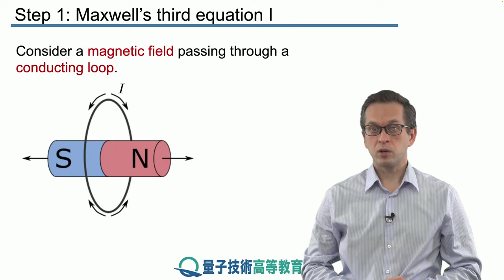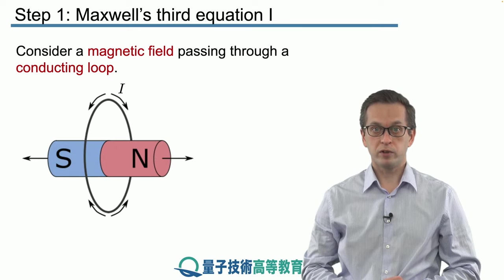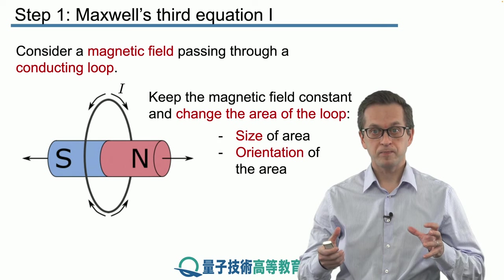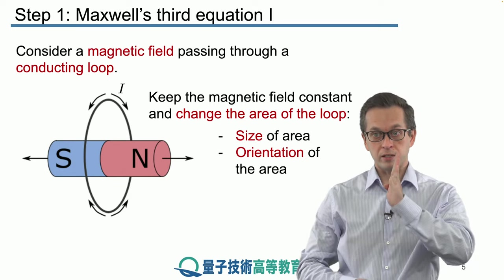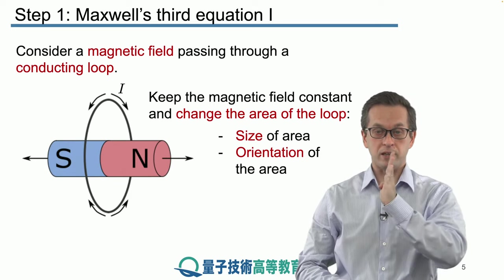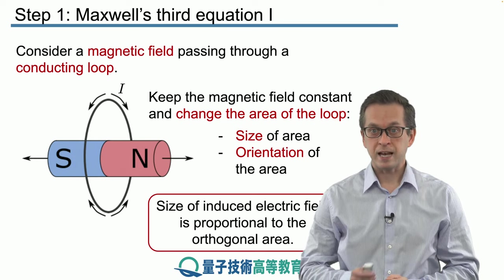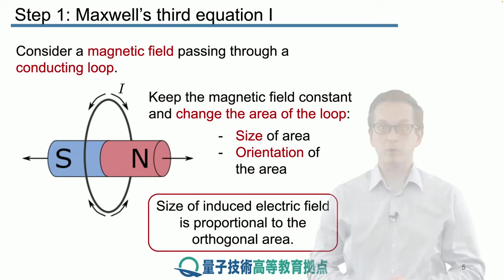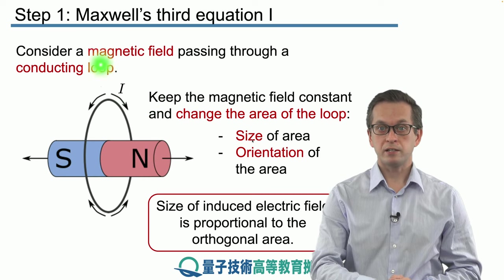We can also consider the magnetic field to be static and play around with the loop. For example we can increase its size or change the orientation of the area. So instead of having it perpendicular to the magnet we can have it at some angle. Experimentally what we observe is that the size of the induced electric field is proportional to the orthogonal area. Here the area is the area enclosed by the loop, so it's this area right here intersecting the magnet.